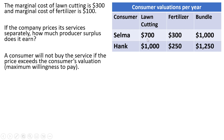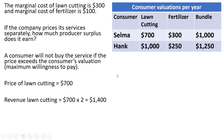Selma will not pay more than $700 for lawn cutting. Hank will not pay more than $1,000 for lawn cutting. In this case, the price of lawn cutting should be set at $700. At $700, Selma will buy lawn cutting, and Hank will buy lawn cutting. In that case, the revenue from lawn cutting is going to be $700 times 2, or $1,400. Two consumers are buying the lawn cutting at $700 each.